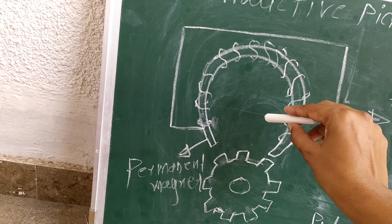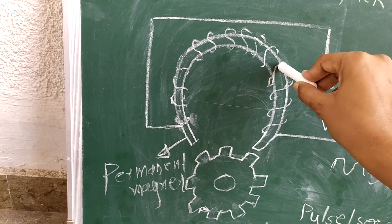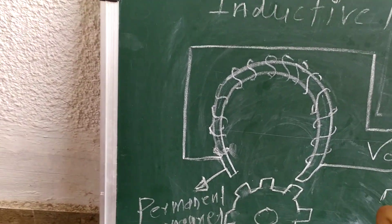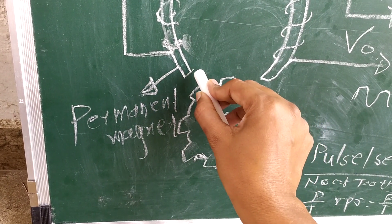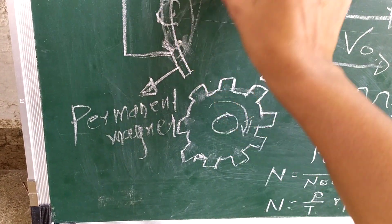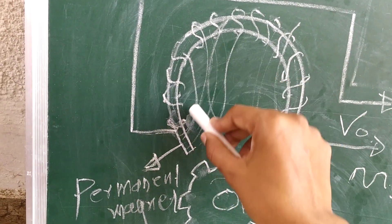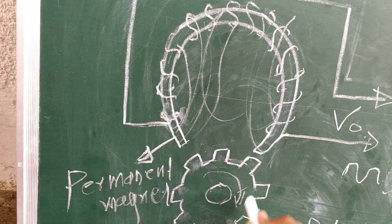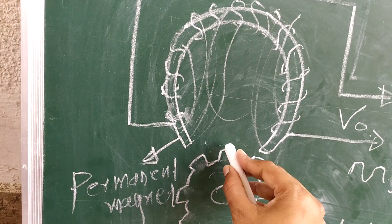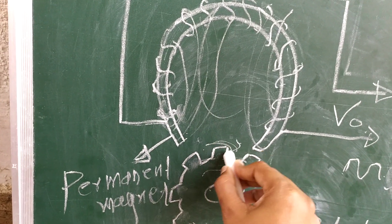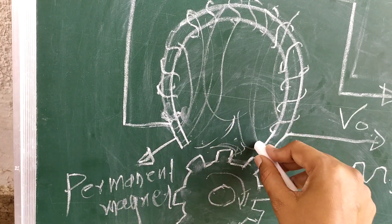When the shaft is rotating, due to the current, a magnetic field or flux is generated. Now when this tooth moves in between this gap, it cuts the flux - this tooth cuts the magnetic flux.